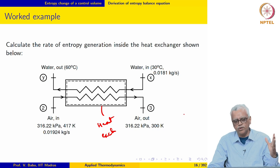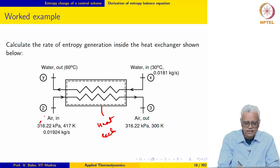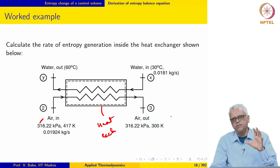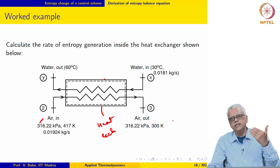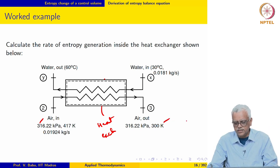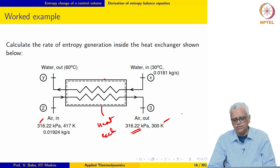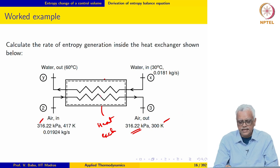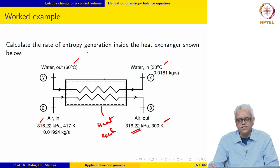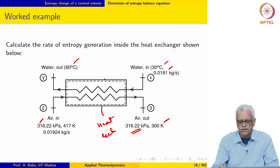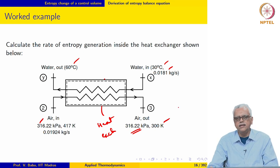Air came into a compressor at atmospheric pressure, was compressed, then taken to an intercooler — this heat exchanger — and cooled to 300 K with pressure remaining the same, before being taken to the next stage of compression. The air stream was cooled using a water stream that came in at 30°C and exited at 60°C. The mass flow rate of water required to accomplish this cooling and all relevant values are shown.